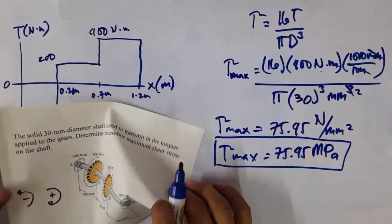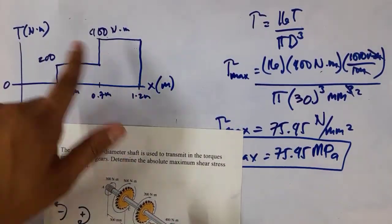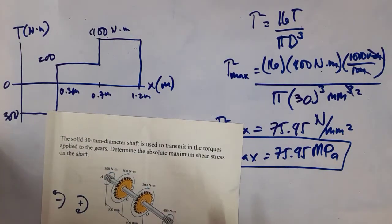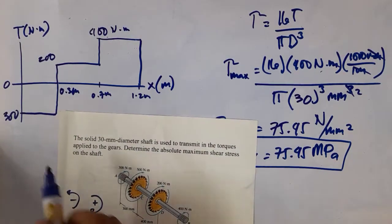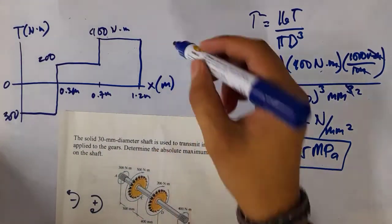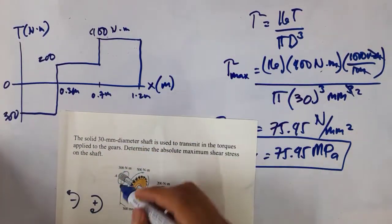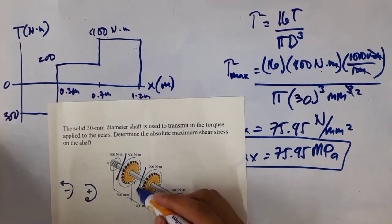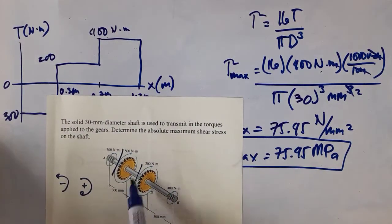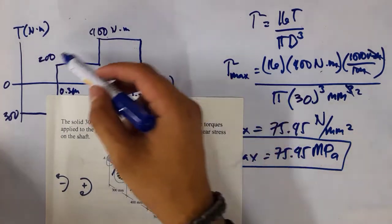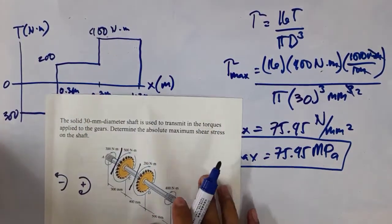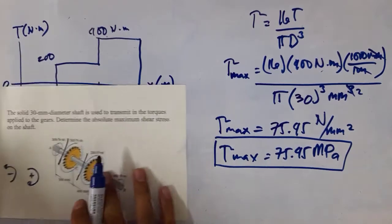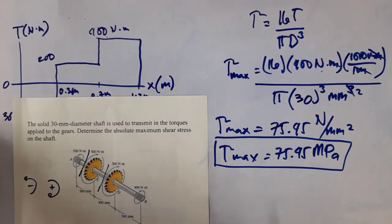So this is one way — another way of getting the result. You can either use this torque diagram approach, or you can also cut sections. For each particular section you cut, you solve for the internal torque, and you will arrive at the same answer. That's it for this problem.